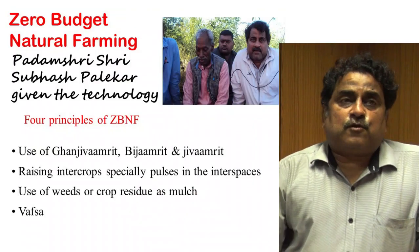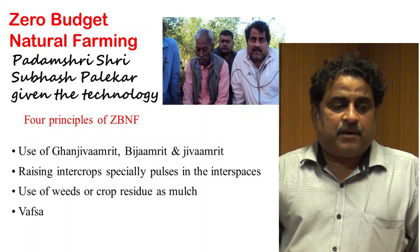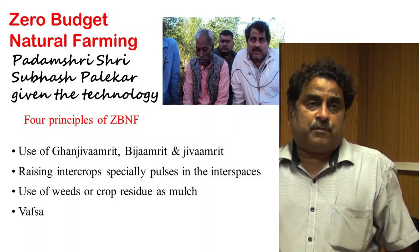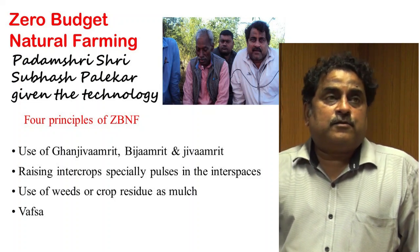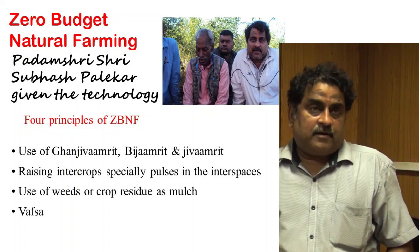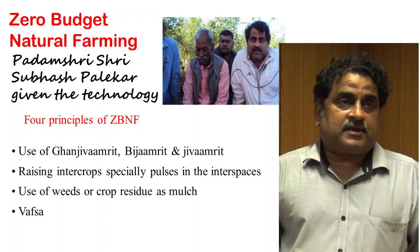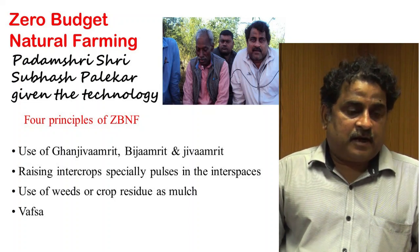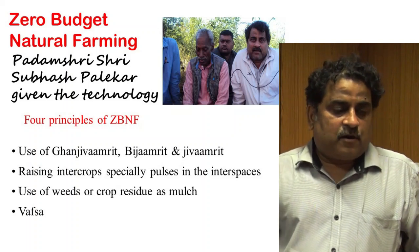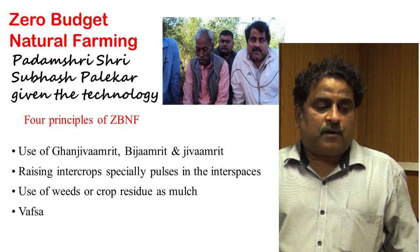Zero Budget Natural Farming was given by Padmashri Subhash Palekar. It relies on four principles: use of Ghanjivamrit, Bijamrit, and Jivamrit; use of intercrops, especially pulses, in the interspecies; use of weeds or crop residue as mulch; and the Wapsa condition. Plant growth is better when soil is 50%, water is 25%, and air is 25%.